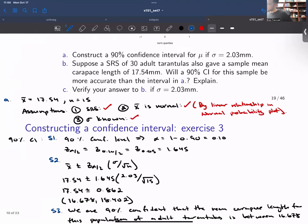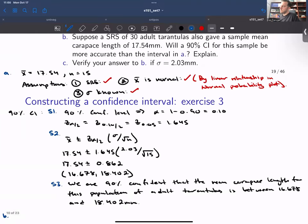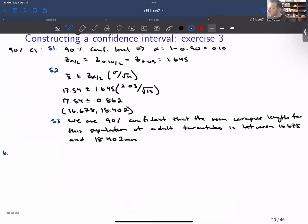In part B, suppose a simple random sample of 30 adult tarantulas also gave a sample mean carapace length of 17.54. So we have the same mean. Will a 90% CI for this sample be more accurate than the interval in A? Explain.